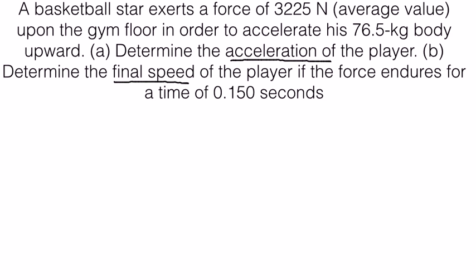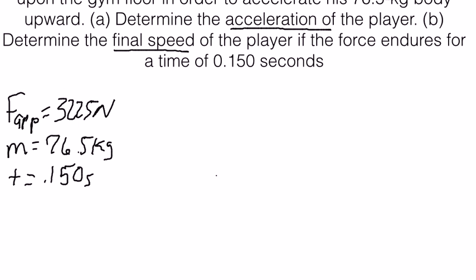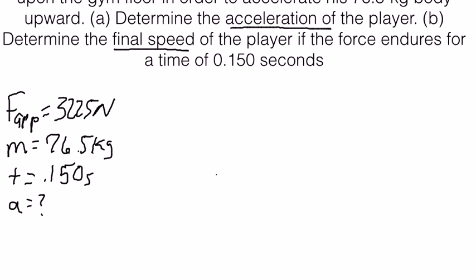A basketball star exerts a force of 3,225 newtons on the gym floor. So that is the applied force — it's 3,225 newtons. He has a mass of 76.5 kilograms, and he's going in an upward motion. Time is equal to 0.150 seconds. We're solving for acceleration and for the final velocity, V2.